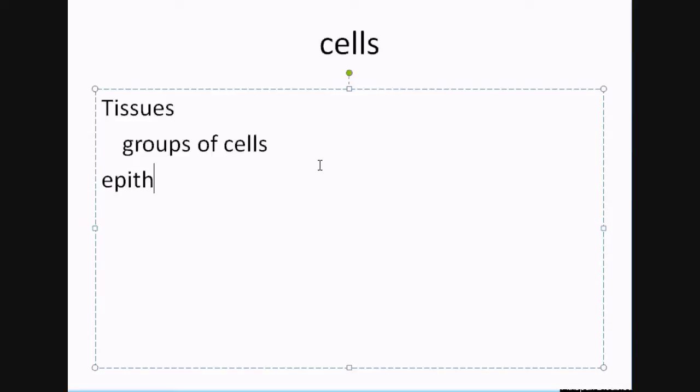There are four primary tissues that we talk about: epithelial tissue, connective tissue, muscle, and nervous tissue.